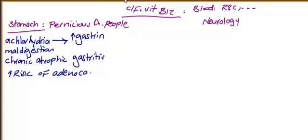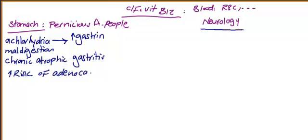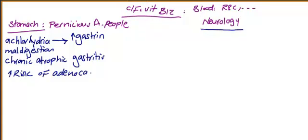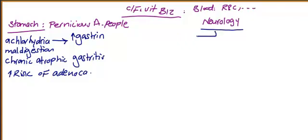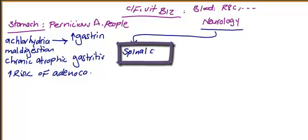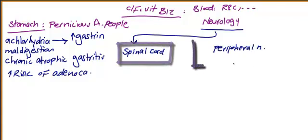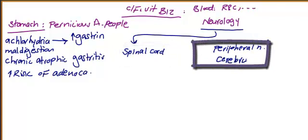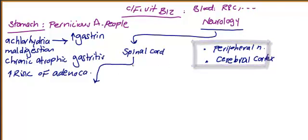There are also neurological problems in vitamin B12 deficiency. We are dealing with three important neurological systems: the spinal cord, the peripheral nerves, and the cerebral cortex.